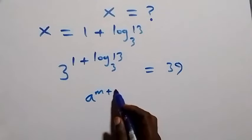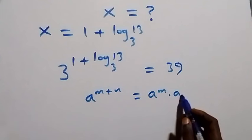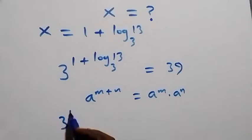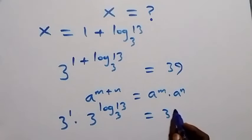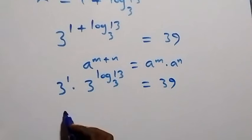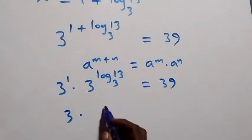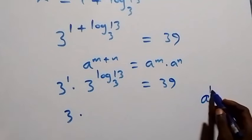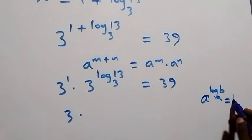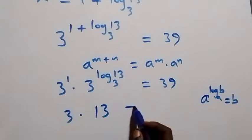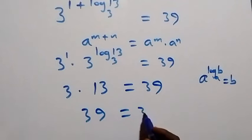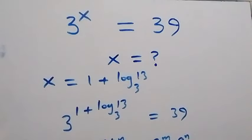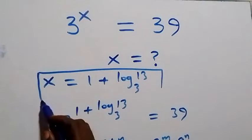Applying the law of indices — a raised to power m plus n equals a raised to power m times a raised to power n — we write it as three raised to power one, times three raised to power log thirteen base three, equals thirty-nine. Three to the power one is three, and three raised to power log base three of thirteen simplifies to thirteen. So three times thirteen is thirty-nine. Since the left hand side equals the right hand side, we conclude that x equals one plus log thirteen base three satisfies the given problem.